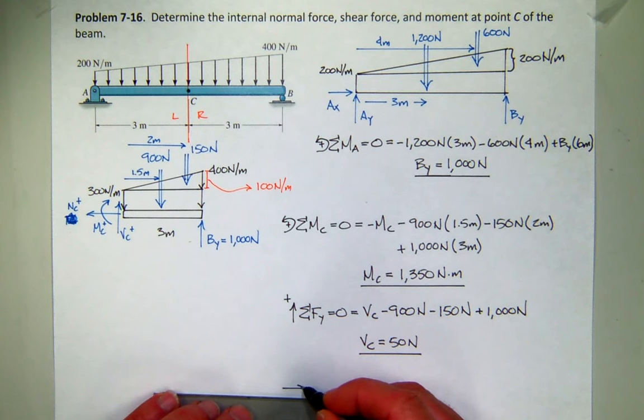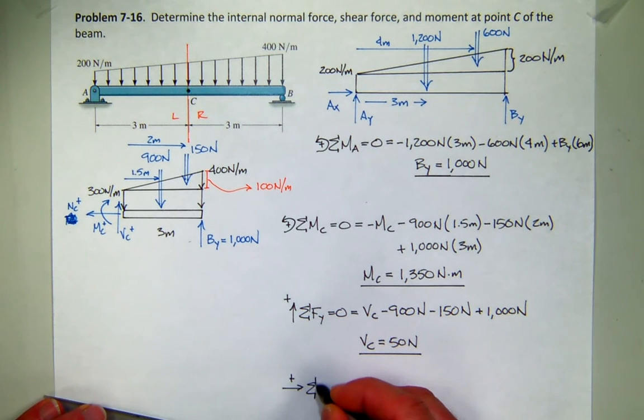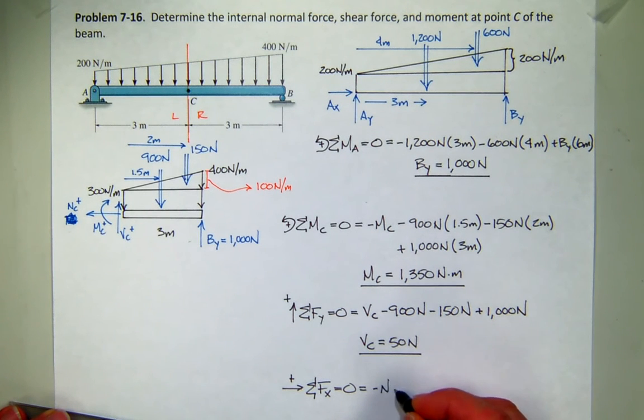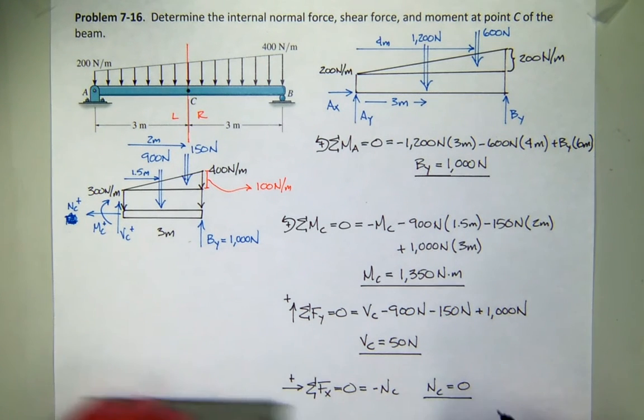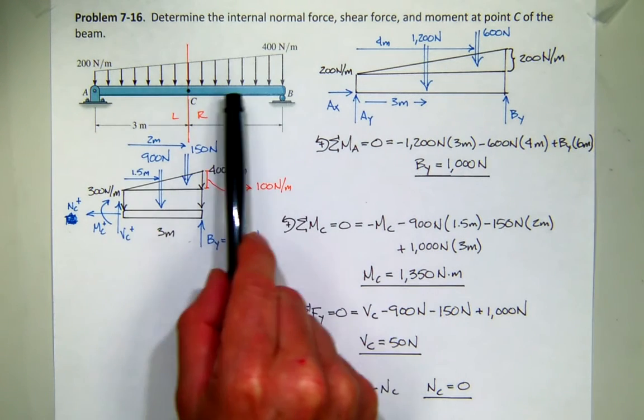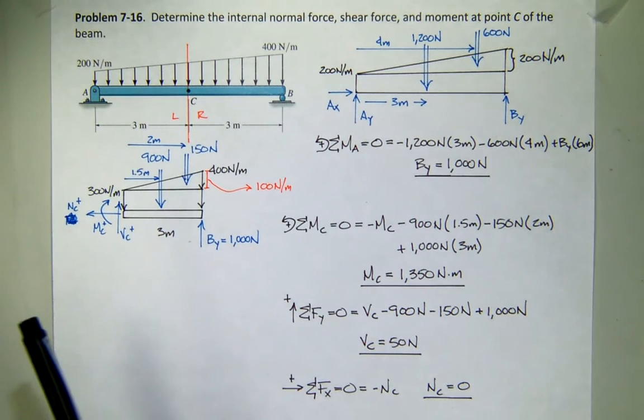And the last equation is kind of anticlimactic. Sum forces in the x direction, and all I have is my normal force. So it looks like my normal force is zero. It's not uncommon for beams that the axial force is zero. Remember, beams are usually designed to handle perpendicular loads. So there's really not any requirement for a reaction in the x direction. So any questions about that one? That would seem a little more doable than the other one.